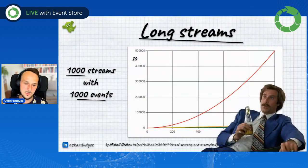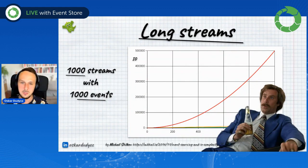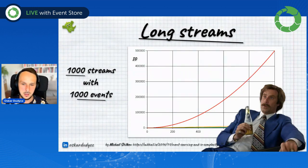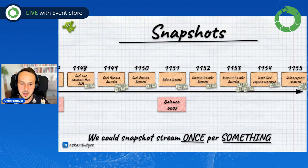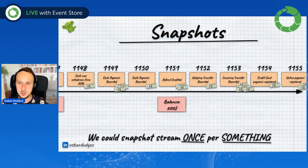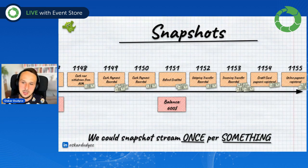Our intention is to make reading events faster, but we are also decreasing the speed of writing — and writing is much harder than reading. So our first idea to optimize could be: instead of making a snapshot after each event, I will just do that once per some interval.